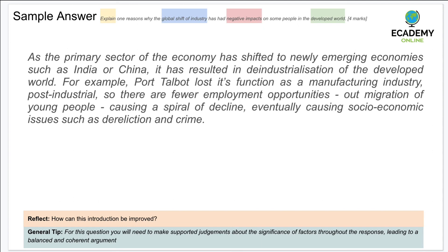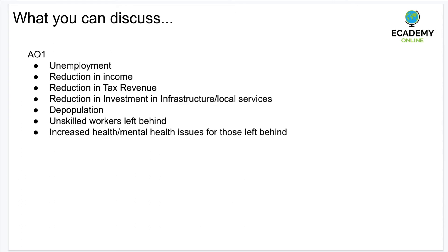Remember the key is to write in your own way. Think about what examples you want to refer to and the keywords you would use. If you completed the suggested note-taking beforehand, you would have identified bullet points such as: unemployment, reduction in income, reduction in tax revenues, reduction in investment in infrastructure and local services, depopulation, unskilled workers being left behind, and increased health and mental health issues. As long as you can validate and communicate these clearly, you will get the marks.